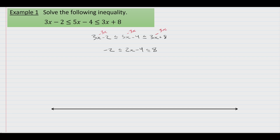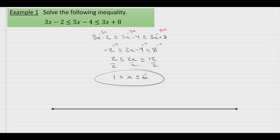Notice now we only have x's in the middle. This makes it really easy to solve. We'll go ahead and isolate x by first adding 4 to each piece, and that will give us 2 on the left, 2x in the middle, and 12 on the right. And finally, we'll solve for x in the middle by dividing everything by 2, which leaves us with 1 less than or equal to x, which is less than or equal to 6. And this is our answer.